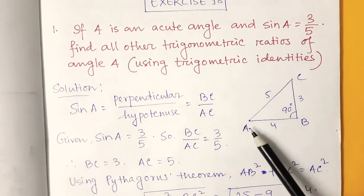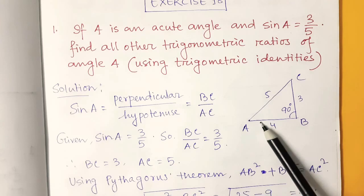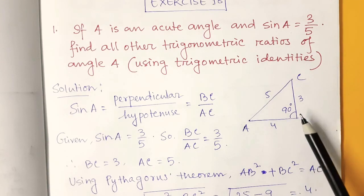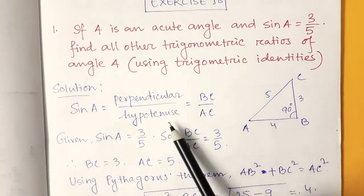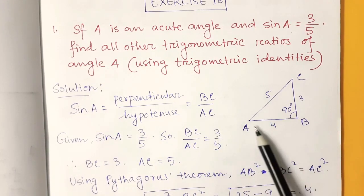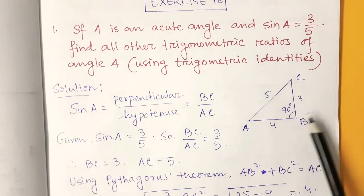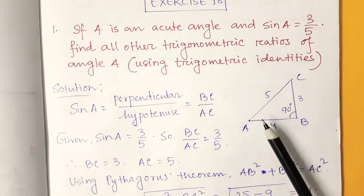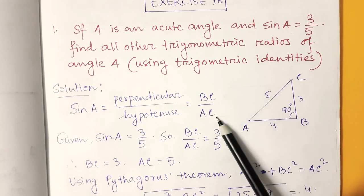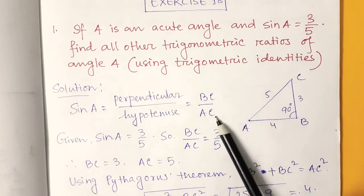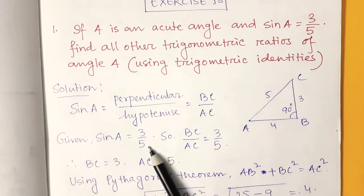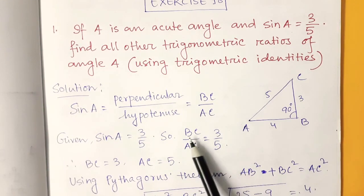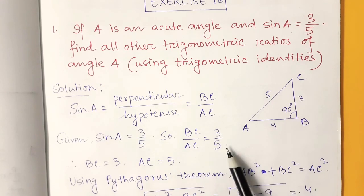This triangle is ABC and this is angle A, and this is angle 90. We know that sin A is perpendicular by hypotenuse. So this is the base, this is the perpendicular, and this is the hypotenuse. So this will be BC by AC. It is given that sin A is 3 by 5, so BC by AC is 3 by 5, meaning BC equals 3 and AC equals 5.